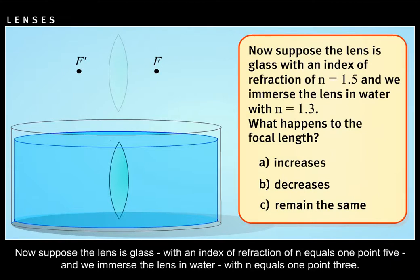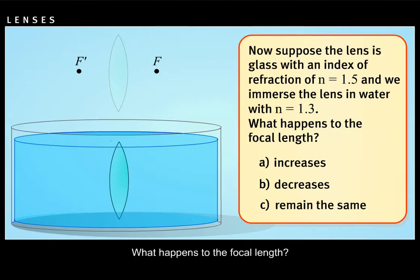Now suppose the lens is glass with an index of refraction of n equals 1.5 and we immerse the lens in water with n equals 1.3. What happens to the focal length?